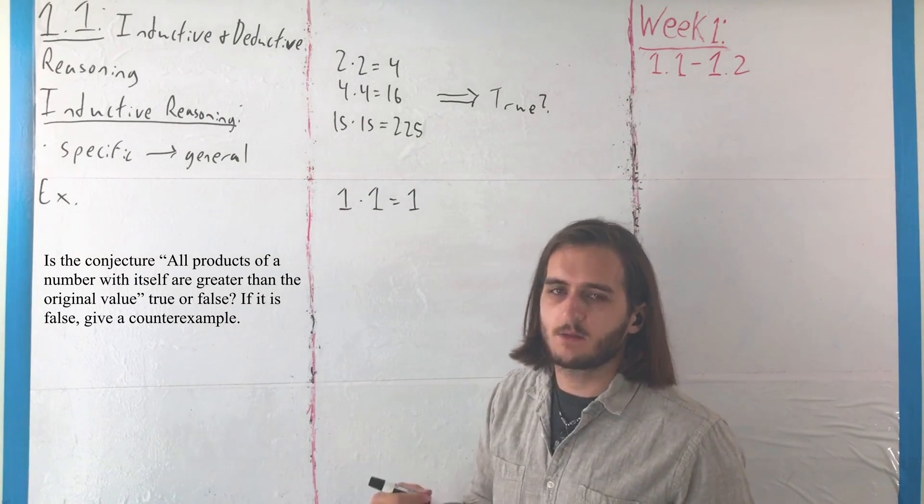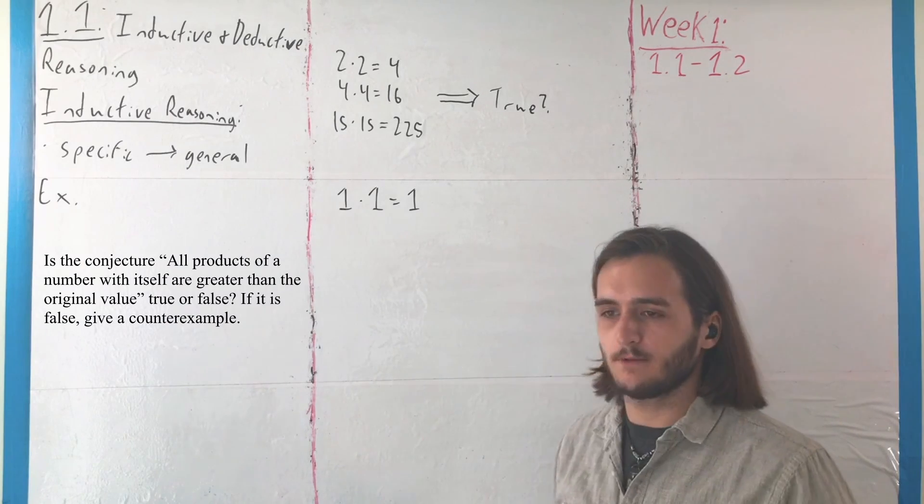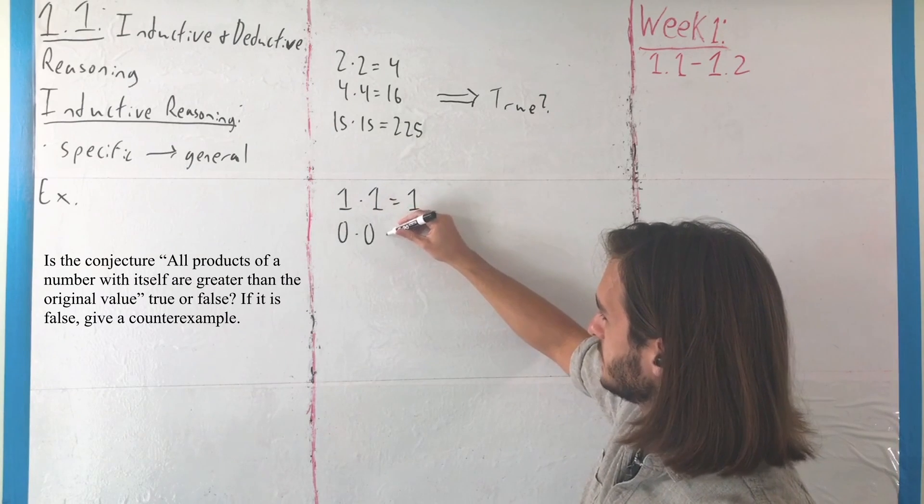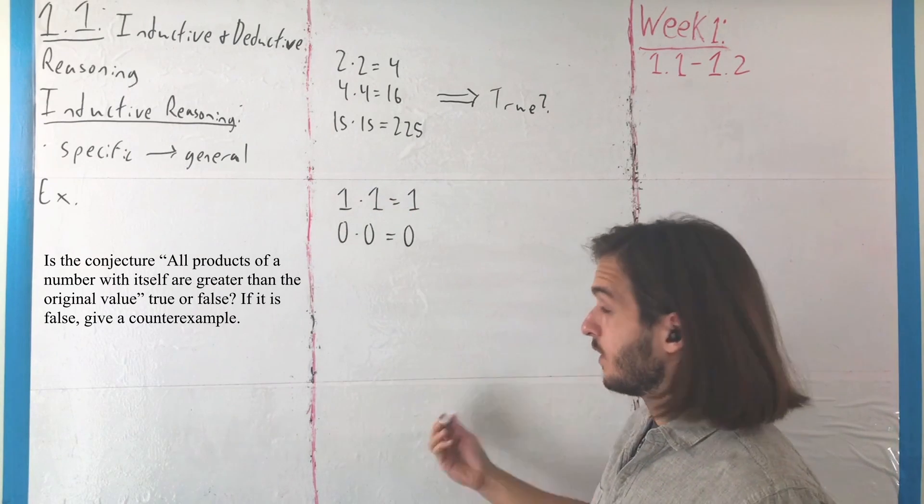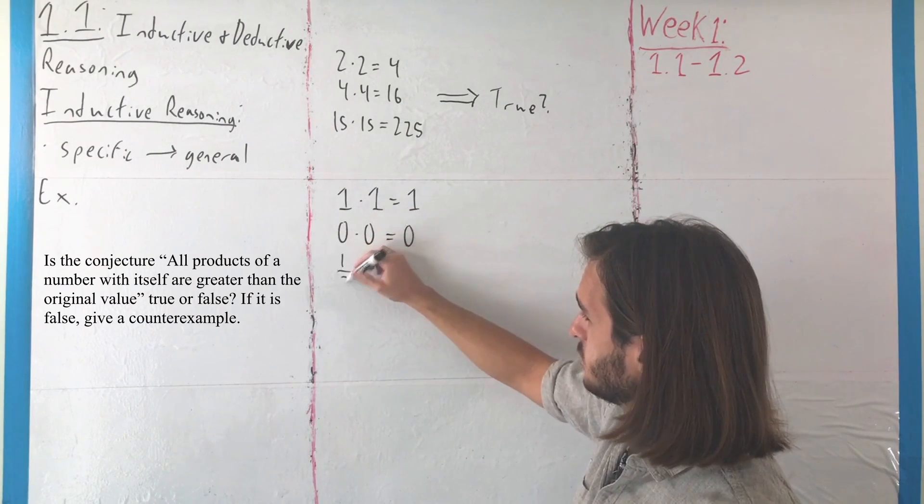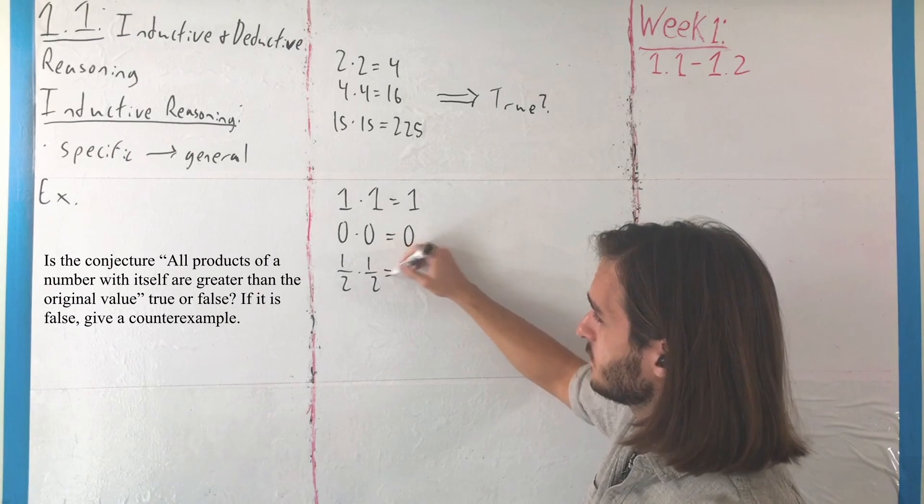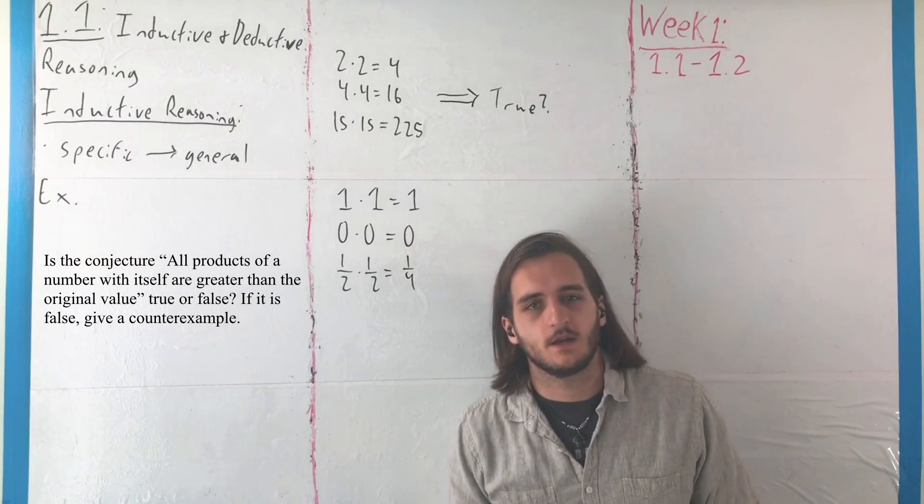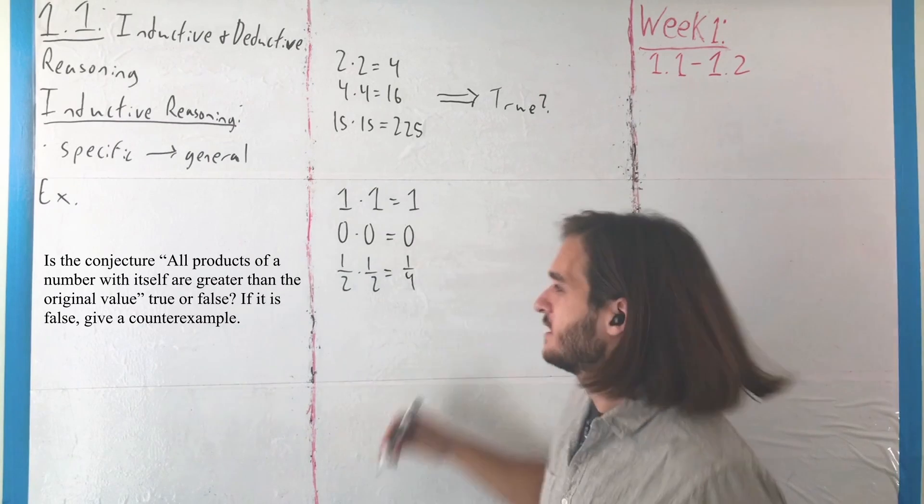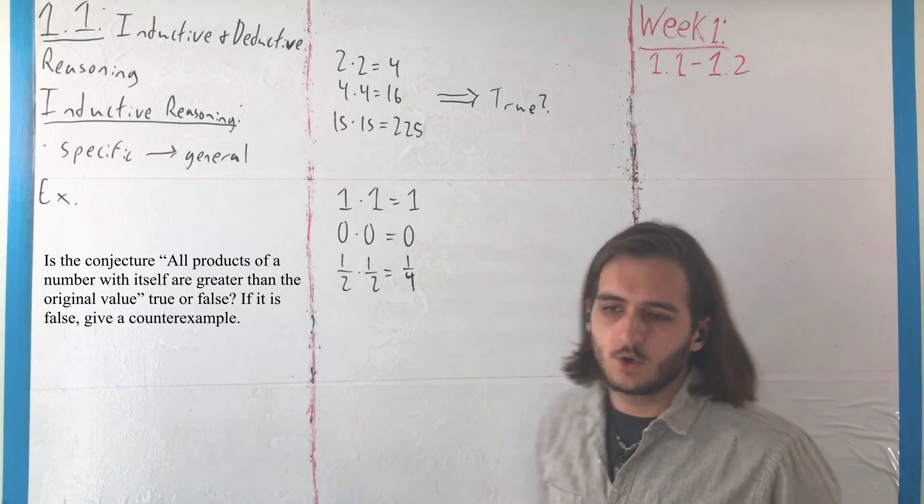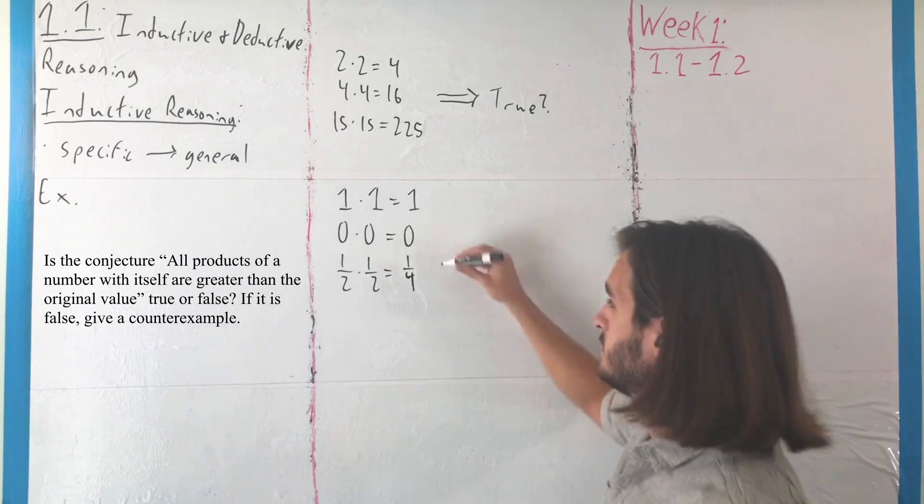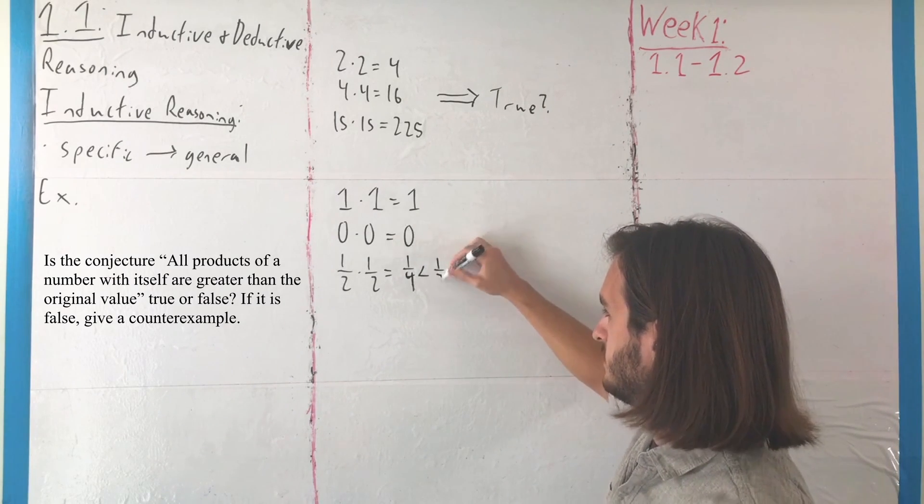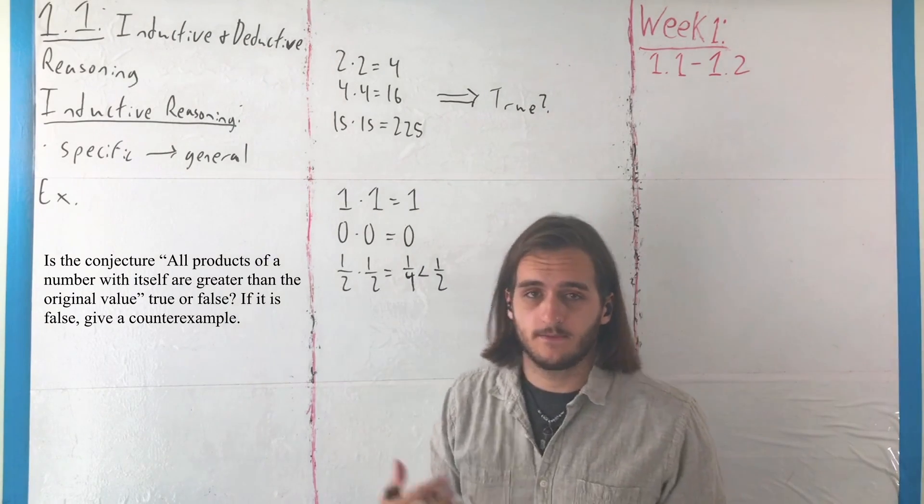And for that matter, if we took other smaller numbers, something like 0 times 0, we'd still get 0. Or, if we took ½ times ½, we'd get something even more instructive. We'd get ¼. And while, yes, the understanding of fractions is sometimes a bit clunky, hopefully we do know that ¼, 25%, is actually smaller than ½, or 50%.